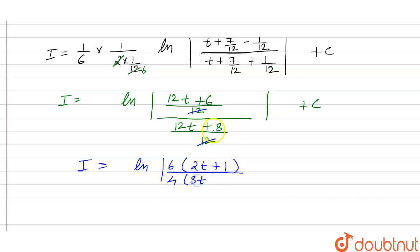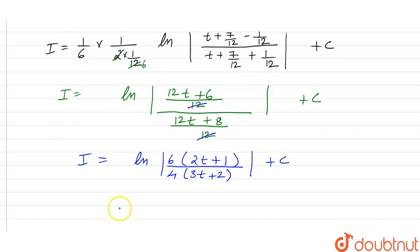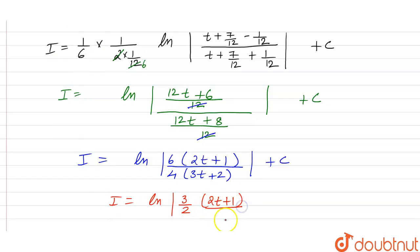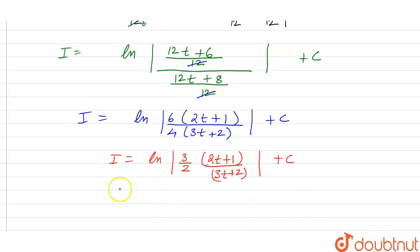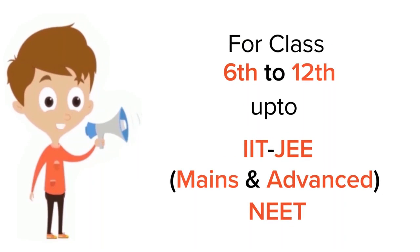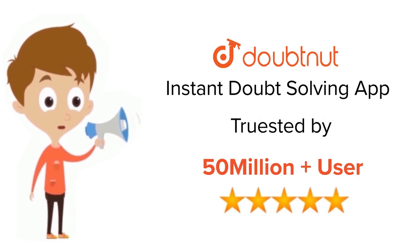Taking 4 common from denominator gives 3t plus 2. So I equals ln of 3 by 2 times 2t plus 1 over 3t plus 2, plus C. Substituting back t equals log x, this is the final answer.